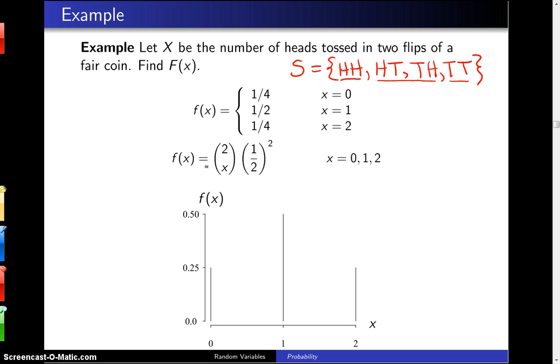And we'll see a little bit later that this is a special case of a distribution known as the binomial distribution. When you draw a graph of f of X, you can see it's 1 fourth, 1 half, and 1 fourth as the three spikes.